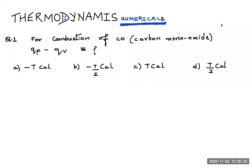Hello students, we come to the numericals of thermodynamics and some MCQs I am discussing in this video. The first question, as you see on the screen, is: for the combustion of carbon monoxide, Qp minus Qv is equal to what? The four options given are: minus T calorie, minus T by 2 calorie, T calorie, or T by 2 calorie.